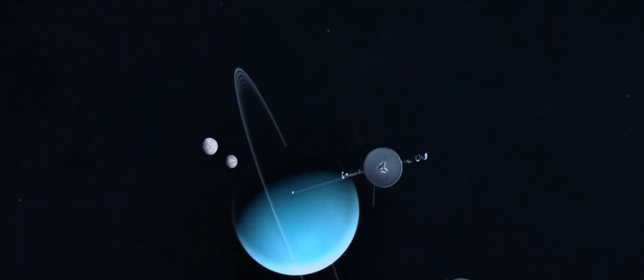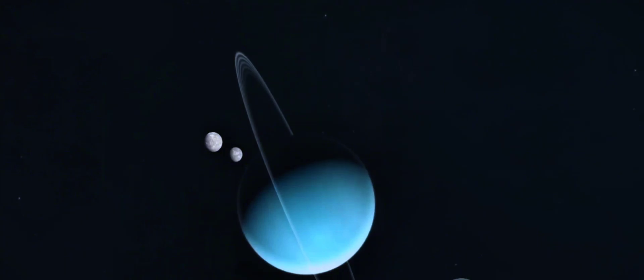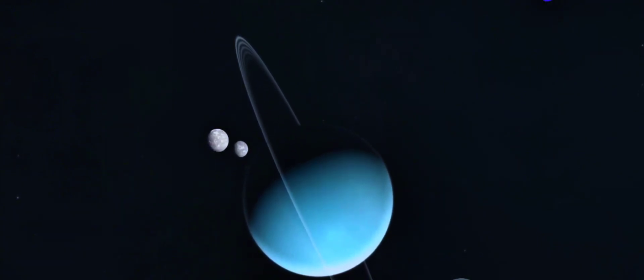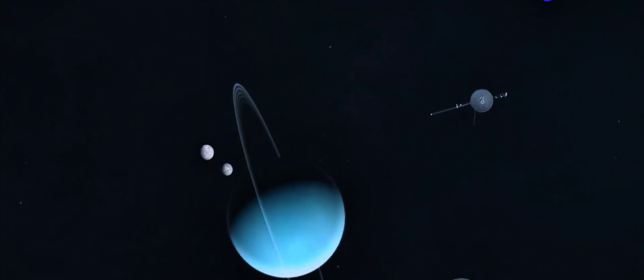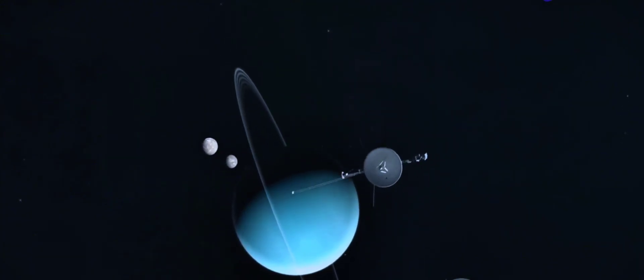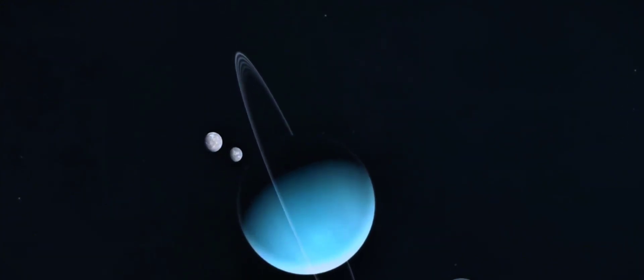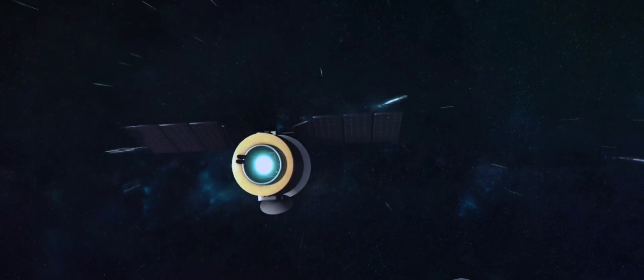In our quest to understand the heliopause, we have sent two intrepid explorers, Voyager 1 and Voyager 2. Launched in 1977, these twin spacecraft were initially tasked with studying the outer planets of our solar system, but their mission didn't end there.